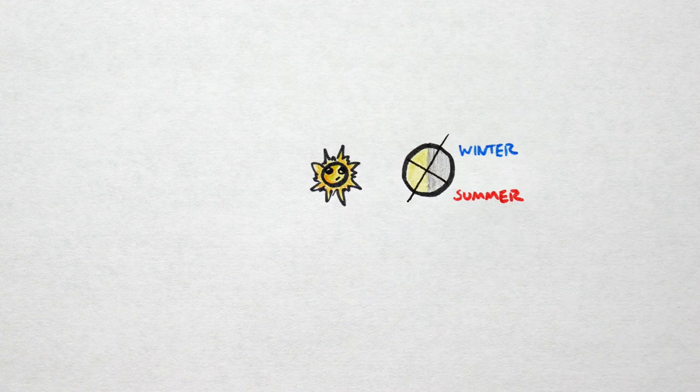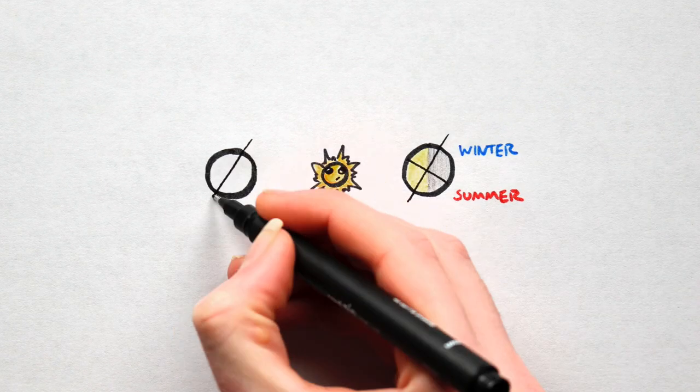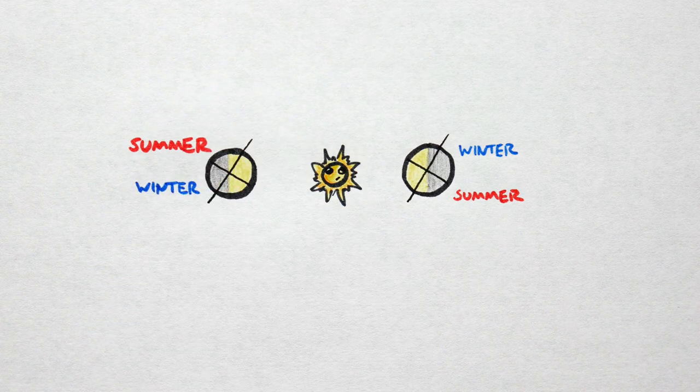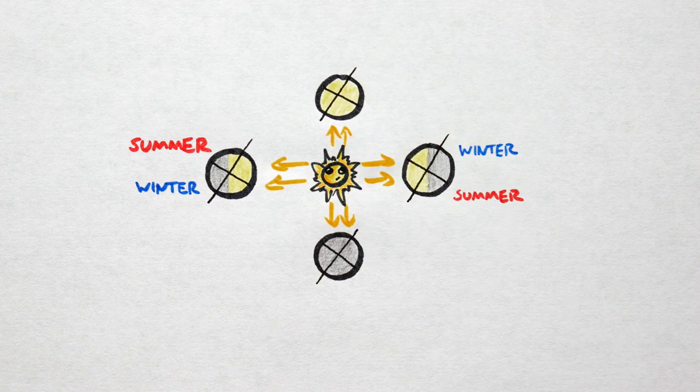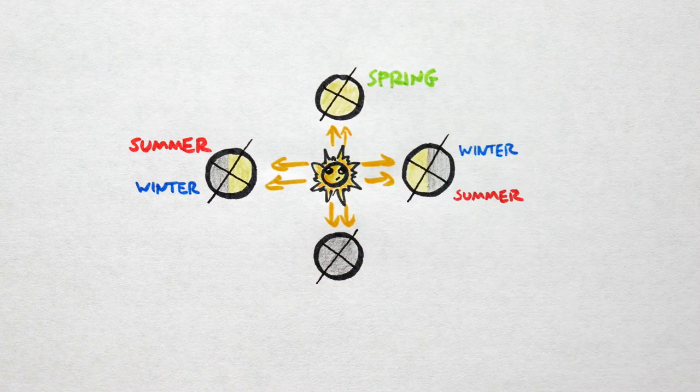Year round, the direction of the Earth's tilt doesn't change. So six months later, the situation is reversed. When neither hemisphere is angled towards the sun here and here, the Earth receives even heating, making it spring in one hemisphere and autumn in the other.